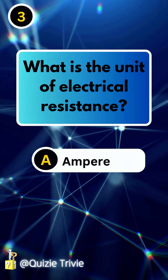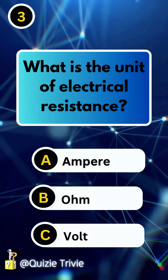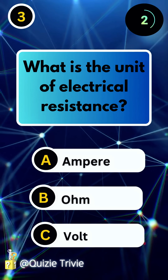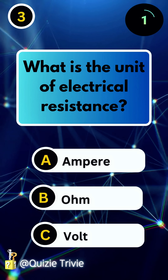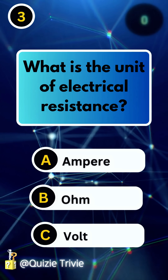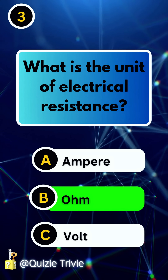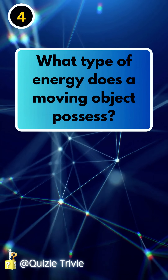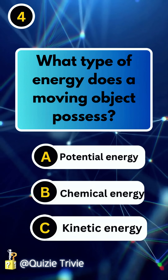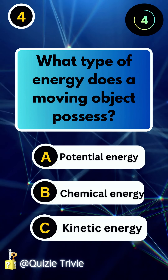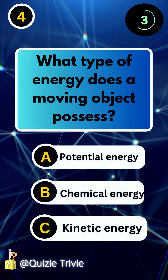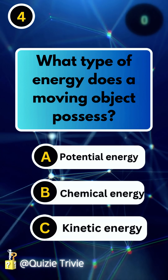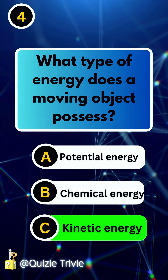What is the unit of electrical resistance? Ohm. What type of energy does a moving object possess? Kinetic energy.